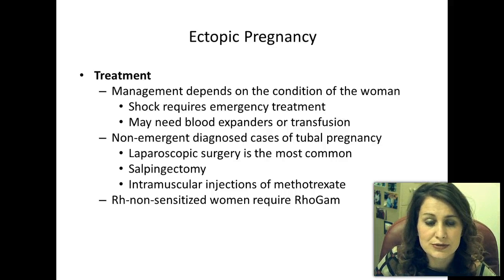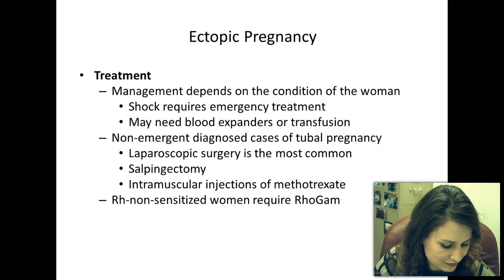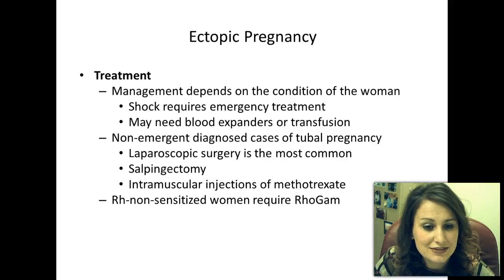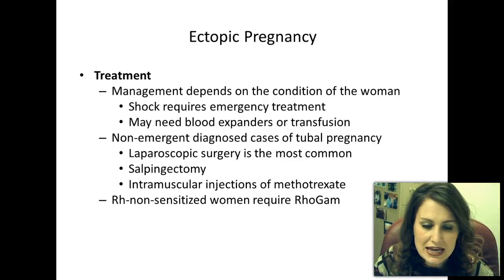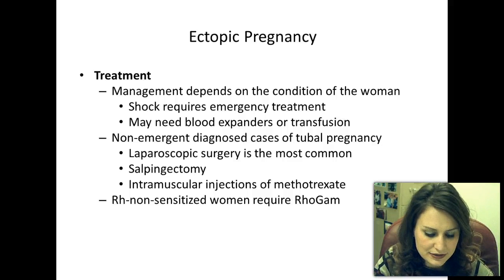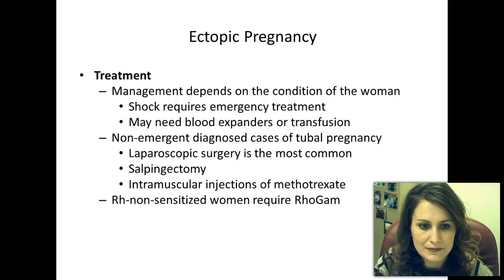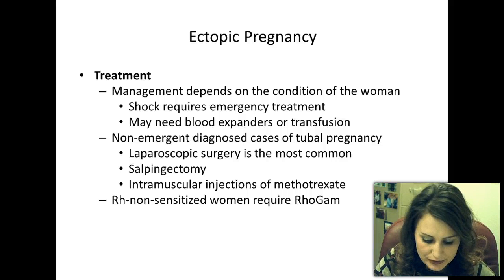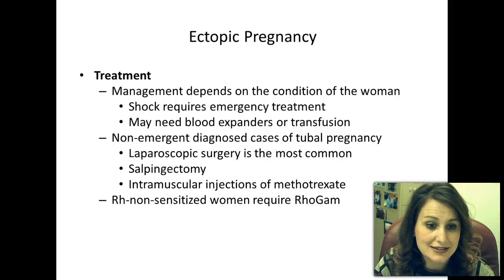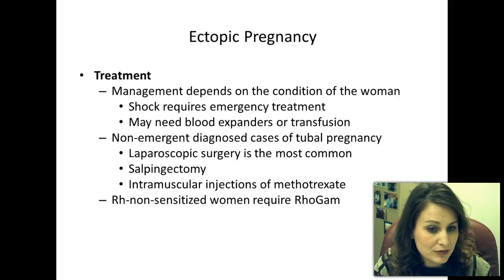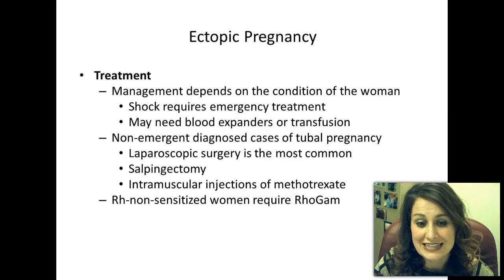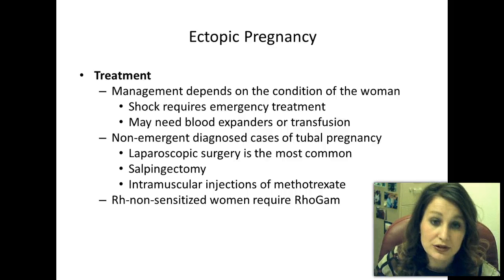For non-emergent diagnosed cases of tubal pregnancy, laparoscopic surgery is most common. Salpingectomy—excision of the fallopian tube—is another option. Intramuscular injections of methotrexate, an anti-neoplastic anti-cancer drug, can also be given; it stops cell division, preventing the zygote from expanding further and allowing the body to pass it on its own. Any mother who is RH negative will require a Rhogam injection.